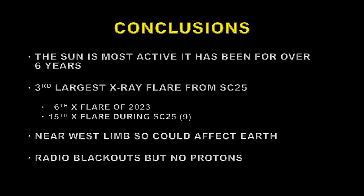It is clear now that the Sun is the most active it has been for over six years. This is the third largest X-ray flare from Solar Cycle 25. It's the sixth X-flare in 2023, which is quite remarkable. It's the 15th overall X-flare during Solar Cycle 25 — Solar Cycle 24 by this stage had only produced nine. It was near the west limb of the Sun, so it could affect the Earth, and there were radio blackouts, but we saw no protons, so it wasn't a very energetic event.